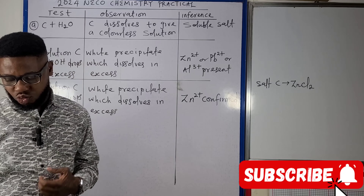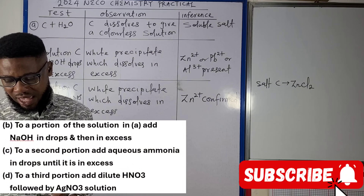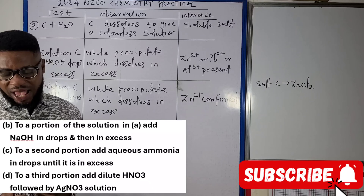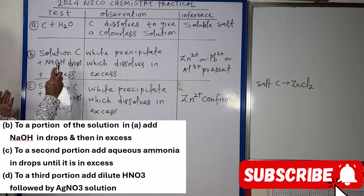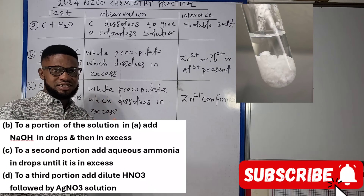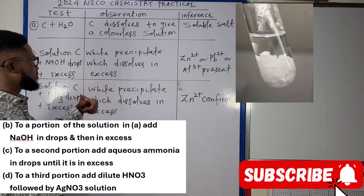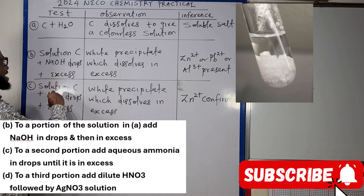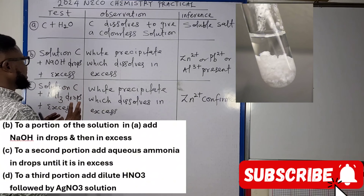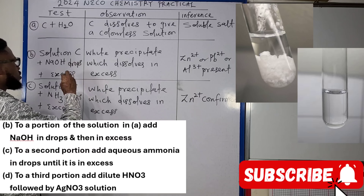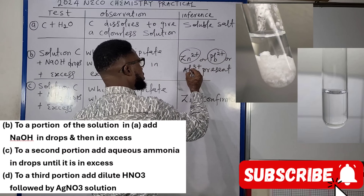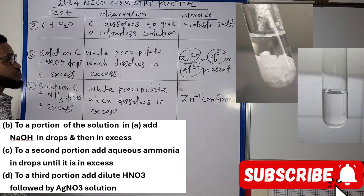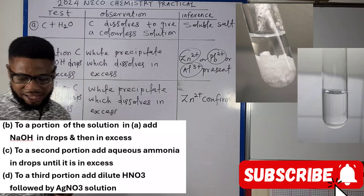Moving on to question B: to a portion of solution from A, add sodium hydroxide in drops and then in excess. When we add sodium hydroxide in drops and then in excess, we are going to get a white precipitate, as shown in the diagram on your screen. This white precipitate will dissolve in excess sodium hydroxide. Once you have a white precipitate that dissolves in excess NaOH, you suspect zinc²⁺, lead²⁺, or aluminium³⁺ ions.